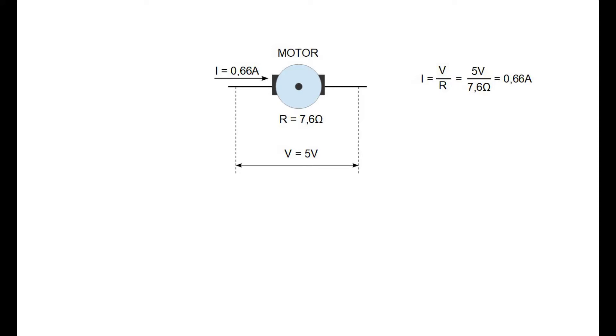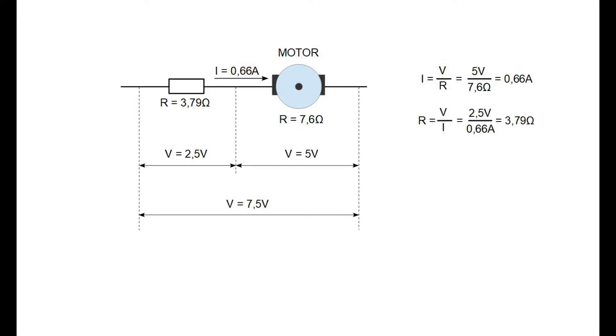Now we can calculate what resistor value do we need. So normally motor should have 5 volt voltage drop. This means that on resistor we should have 2.5 volt voltage drop in case if we are operating the car on 7.5 volts. Because the current through the motor will be the same as through the resistor we can calculate the resistance that we need. In this case those would be 3.79 ohms.